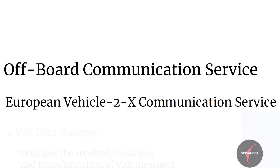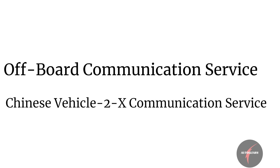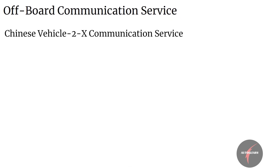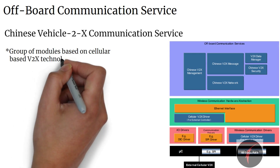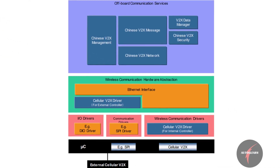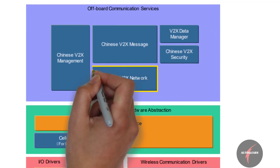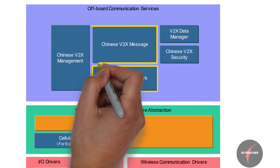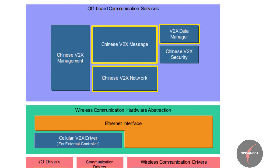Now with that we have covered a brief on European Vehicle-to-X communication service. Let's have a look into Chinese Vehicle-to-X communication service. Chinese Vehicle-to-X communication service, similar to European Vehicle-to-X communication service, is a group of modules based on cellular-based Vehicle-to-X technology following Chinese Vehicle-to-X standards. It consists of the following modules: Chinese Vehicle-to-X Network, Chinese Vehicle-to-X Message, Chinese Vehicle-to-X Data Manager, Chinese Vehicle-to-X Security, and lastly Chinese Vehicle-to-X Management.